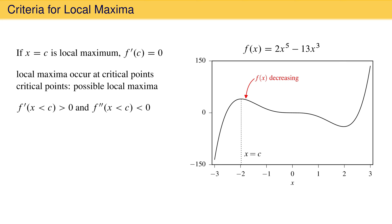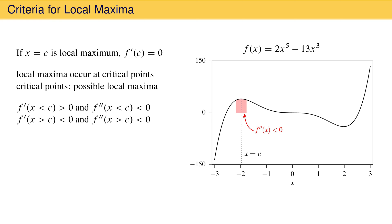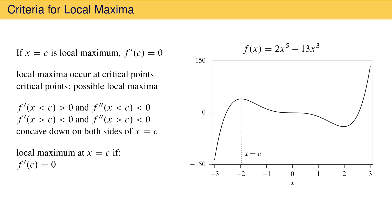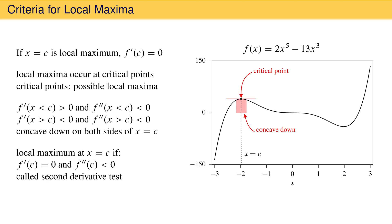For a critical point to be a local maximum, the function must be increasing before the critical point, giving a first derivative that is positive. But the derivative must be decreasing to allow the function to reach the local maximum, and this requires a second derivative that is negative. After the critical point, the function must be decreasing, requiring a first derivative that is negative, and the slope must also be decreasing, which requires a second derivative that is negative. If the second derivative is negative on both sides of the critical point, the function is concave down — and this is the second criterion for a local maximum. A local maximum exists at point c if the first derivative equals zero and the second derivative is negative. This is called the second derivative test for a local maximum.